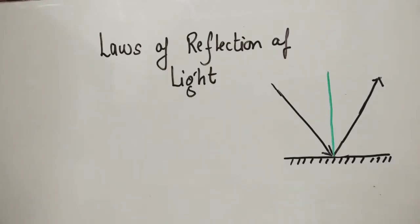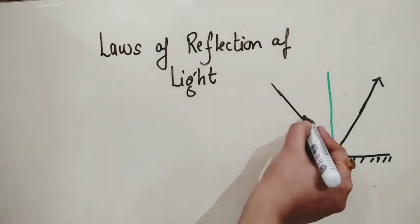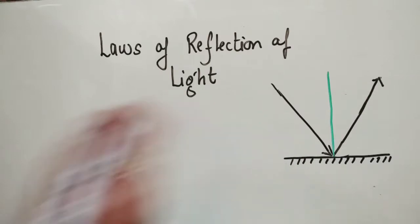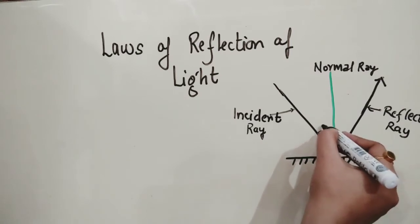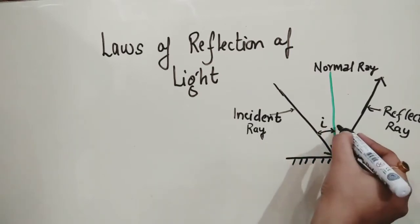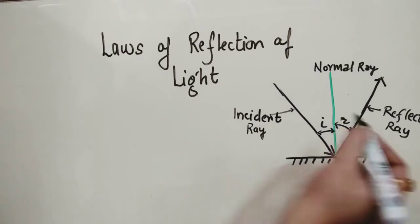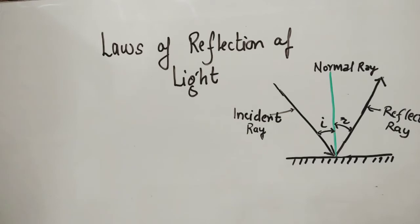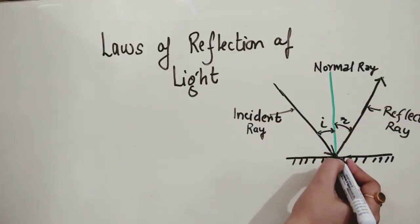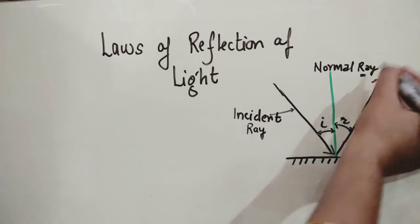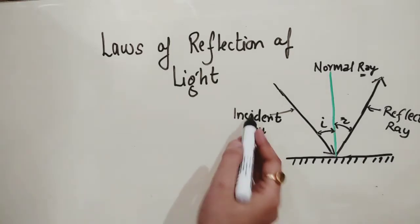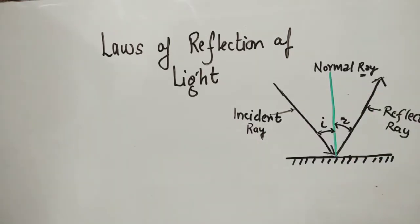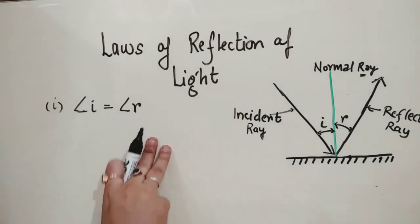Next are the laws of reflection of light. This is the incident ray, reflected ray, and the normal ray. The angle is considered as the angle of incidence (small i) and the angle of reflection (small r). One important point: while drawing these lines, you must draw an arrow — only then is it representing a ray. A ray has a particular direction in which it is moving. The first law of reflection states: angle of incidence is equal to angle of reflection.